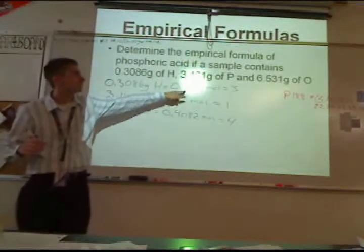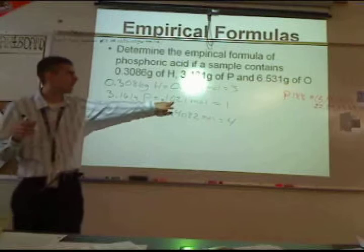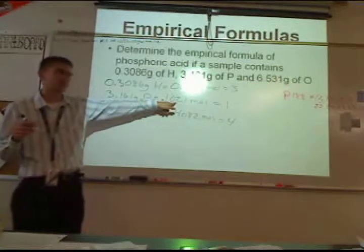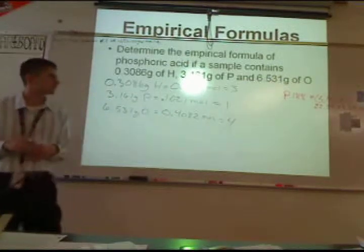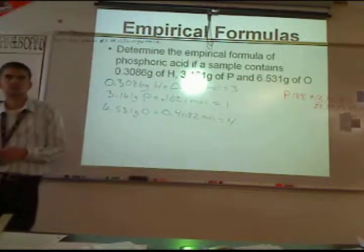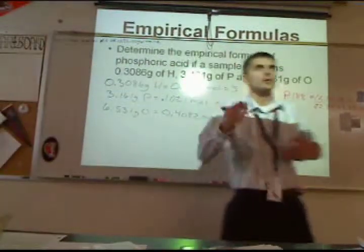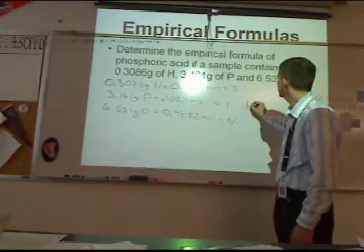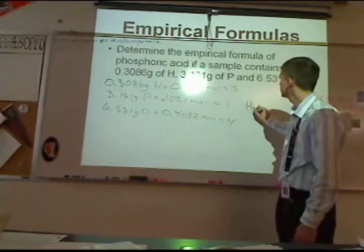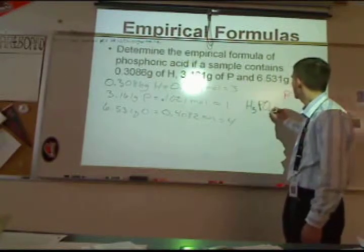It's going to be a 3 to 1 to 4 ratio. You could divide them all by the smallest number and get the same answer. So your formula is going to be H3, one P, and 4 oxygens — H3PO4.